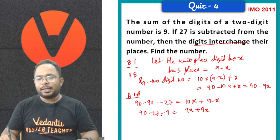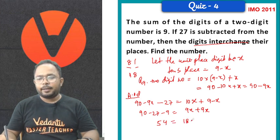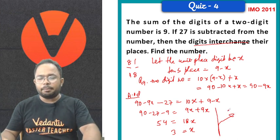If you subtract 90 minus 27, it comes around 63. Again, you subtract 9, it gives you 54. And this side 18x. So, x is equal to 3. Therefore, you get the 2 digit number as 90 minus 9x. That gives you 90 minus 9 into 3. That is 90 minus 27. That gives you 63 as the right answer.